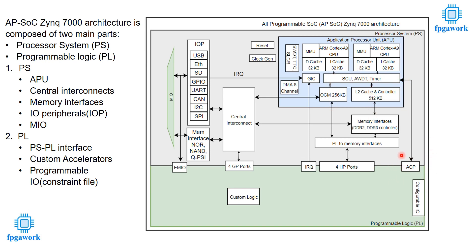The ACP port can read and write data from both DDR RAM and OCM — it is the fastest interface between PS and PL. The last component is configurable IOs, which allow PL to communicate with the external world. This is how the Zynq 7000 architecture works. This level of detail should be sufficient for the following videos, but if you have questions about missing components, please write in the comment box.